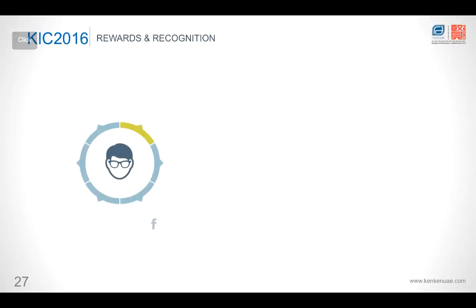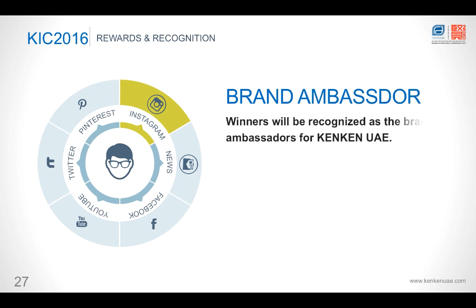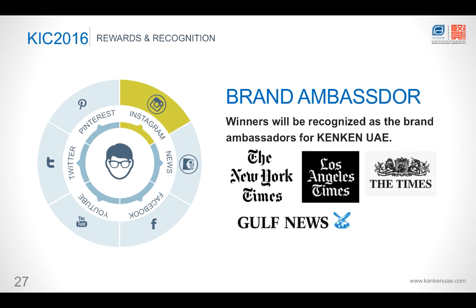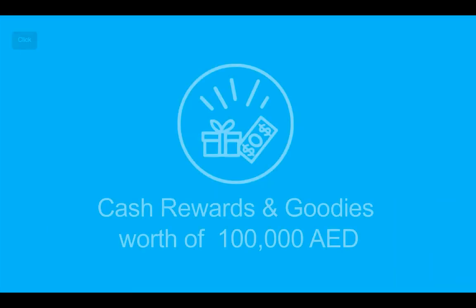Now, because this is an international championship, we have tied up with all the major print and online brands. So, if you subscribe to New York Times, you can see KenKen there. So, if you happen to be the winners, we will make sure that your name appears in any one of these mediums. And finally, just to add an icing on the cake, this year, we are doling out cash prizes and goodies worth 100,000 throughout the championship. So, there is a lot of things to win. And plus, this is a global event. So, you should definitely register.